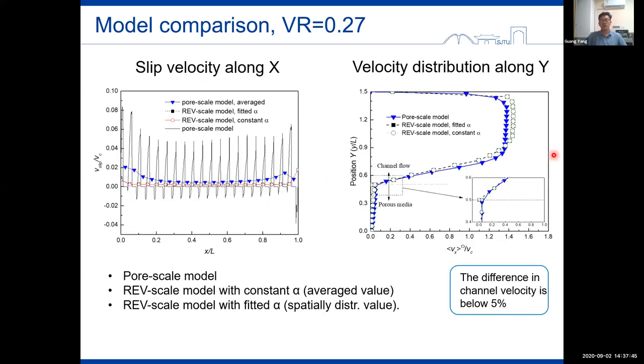Then we implemented this calculated alpha into REV scale models on the platform of DuMuX. Here, both constant and spatially distributed values of alpha are used. And these two figures compare the velocity distribution by pore scale and REV scale models. It seems that the difference in the channel velocity is below 5% from different models. And the models with constant alpha and spatially distributed alpha almost can get the same results.